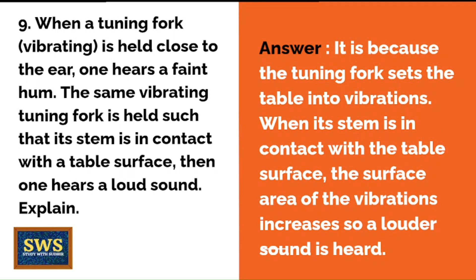When a vibrating tuning fork is held close to the ear, one hears a faint hum. When the same vibrating tuning fork is held with its stem in contact with a table surface, one hears a loud sound. Explain why. It is because when the stem is in contact with the table, it sets the table into vibrations, increasing the surface area of vibration, so a louder sound is heard.